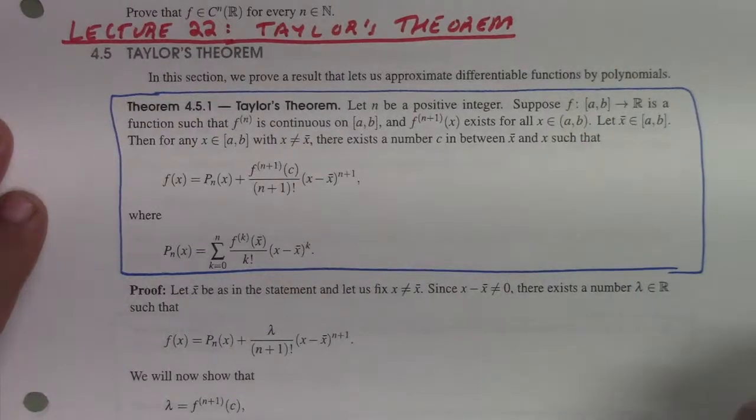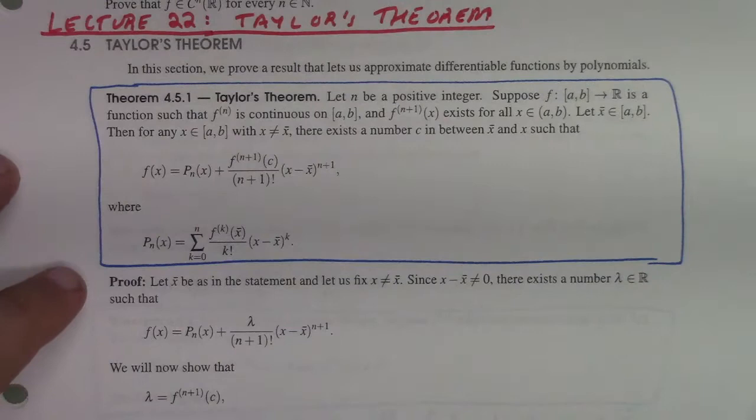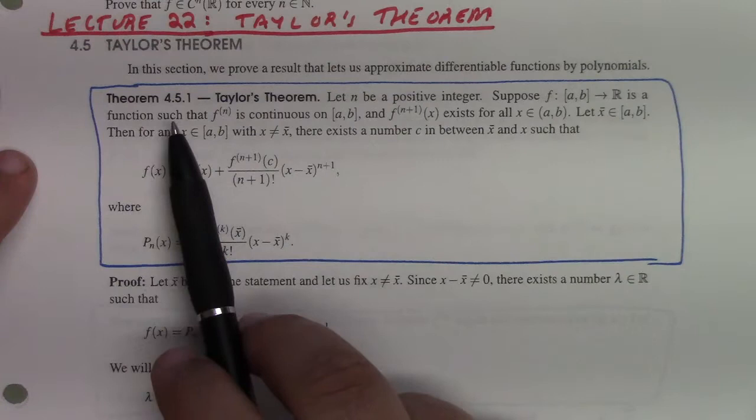Next up is lecture 22, which is on Taylor's Theorem. Let n be a positive integer, and suppose f is a function from the closed interval [a, b] to the reals, such that the nth derivative is continuous on the closed interval from a to b.